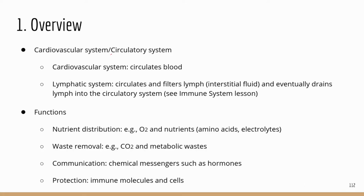You may see study manuals refer to this as the circulatory system. The cardiovascular system — based on the name — includes the heart (the cardio part) and the blood vessels (the vascular part). But the study menu includes the lymphatic system as well, which I will review in more detail when we get to the immune system.